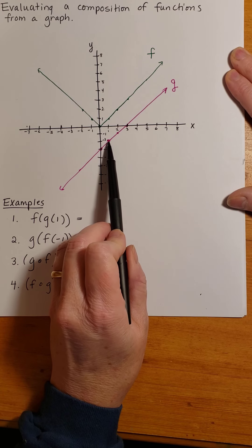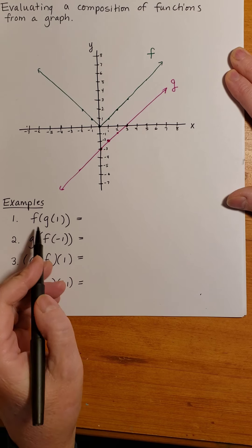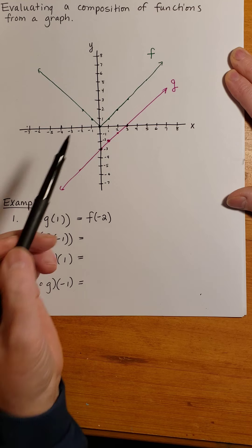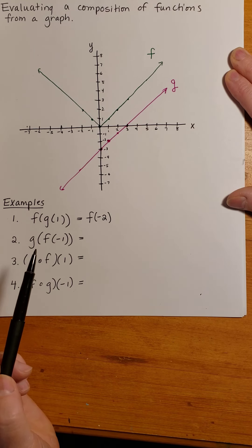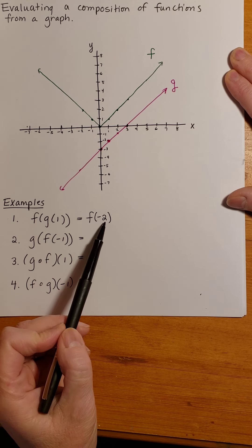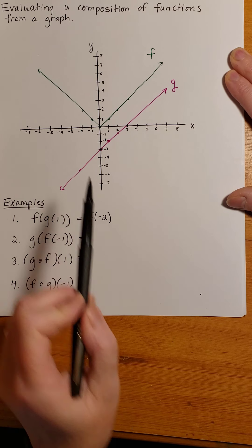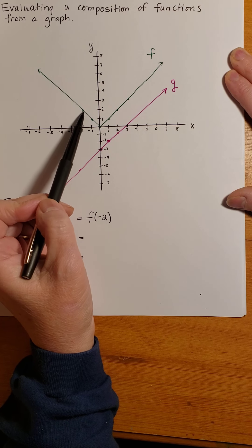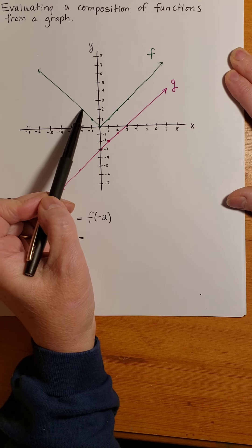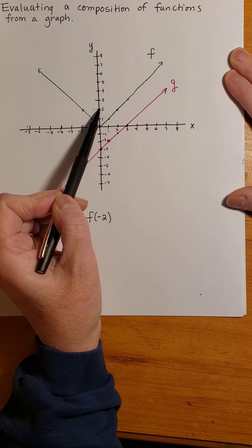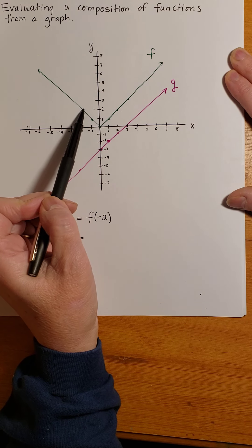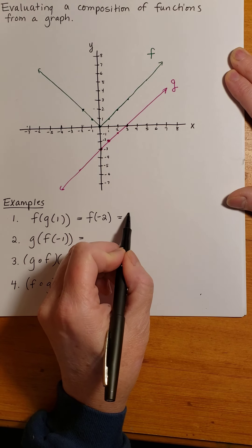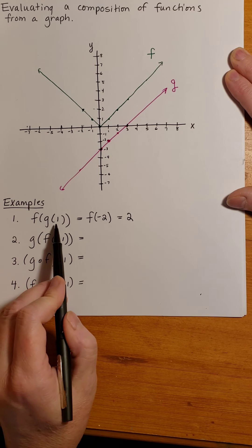So now this becomes f of negative 2. Negative 2 is the output for my g function. It becomes the input for f. Now to evaluate f of negative 2, I find negative 2 on the x-axis and take my vertical path to the function, and here at this point the output is 2. The y value corresponding with this point is 2. So f of g of 1 equals 2.